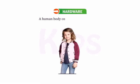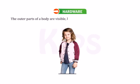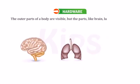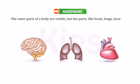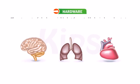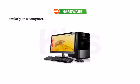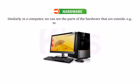A human body consists of different parts. The outer parts of a body are visible, but the parts like brain, lungs, heart, etc., which are inside, cannot be seen. Similarly, in a computer, we can see the parts of the hardware that are outside — for example, monitor, keyboard, etc.